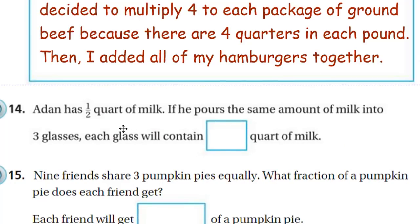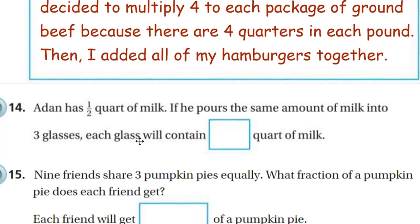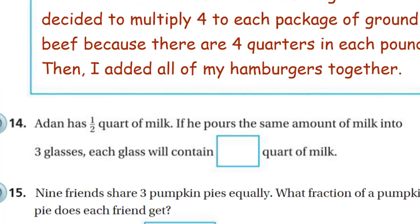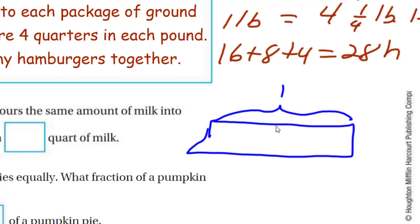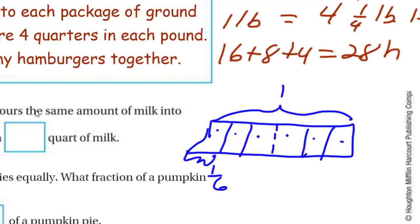Adan has a half quart of milk. If he pours the same amount of milk into three glasses, each glass will contain how much quart of milk? He has a half and he's dividing it by three. I'll show a model: here's the one whole, and we're just looking at the half quart. Taking that halfway mark and dividing it into three equal glasses — when I divide the half into thirds, my thirds turn into six parts of the whole. So each unit is one sixth. Therefore each glass will contain one sixth quart of milk.